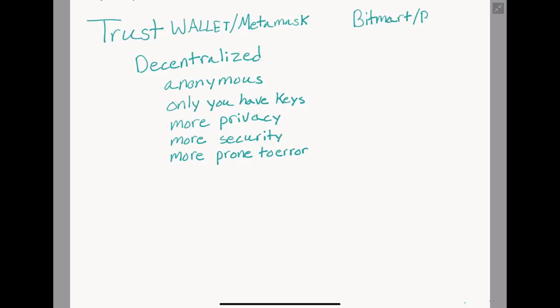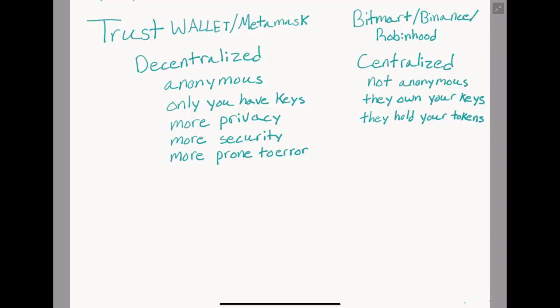Centralized exchanges such as Bitmart or Binance use wallets very differently. Robinhood, for example, does not actually give their users a real public key at all. Instead, they are the actual sole owners of all the cryptocurrency held on their platform. When a user buys some Bitcoin on Robinhood, the Bitcoin does not actually move from one address to their address. Instead, Robinhood just updates their database to reflect how much of their Bitcoin you have access to. The Bitcoin is never really yours.